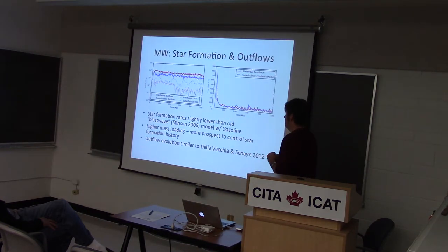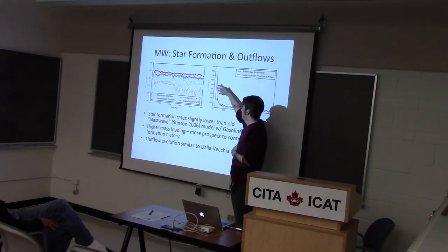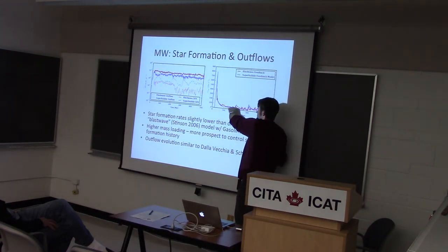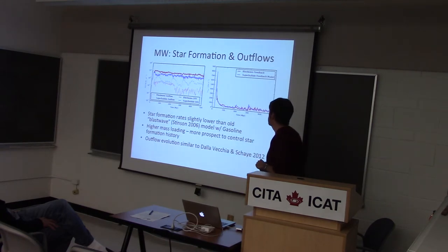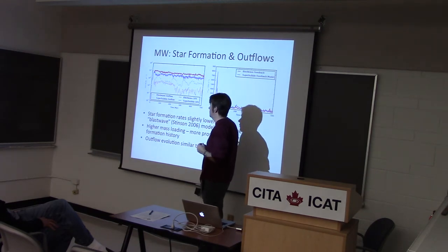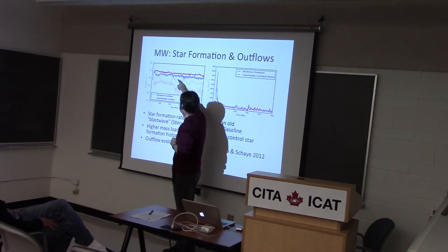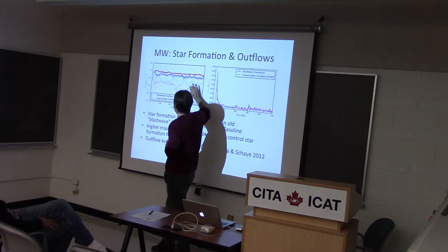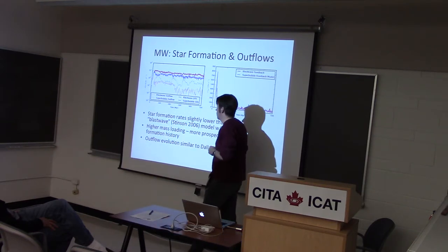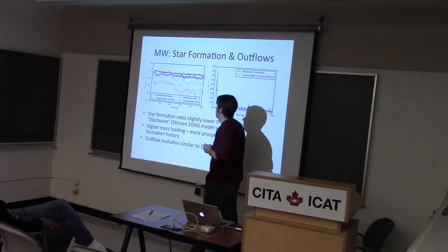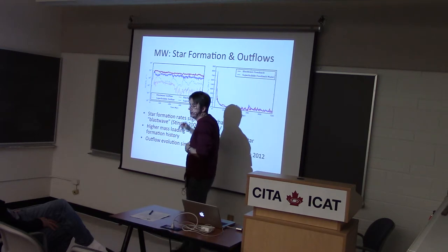In terms of the outflows, this is more of a quiescent case. You start off with a bit of a transient burst where you get a few hundred km/s, maybe up to 700-800 km/s for a short while, but that's a transient because of the initial state. You settle down to fountain-type bubbles with about 50 km/s type outflow rates. Comparing to our old treatment, which we call blast wave from Stinson 2006, the star formation rate is a little bit lower but the mass loading is a lot higher. We have a star formation rate of order 10 solar masses per year and a mass loading of about one.